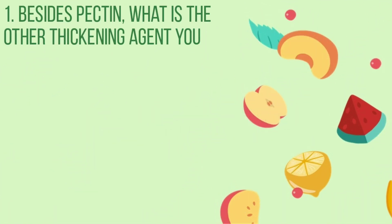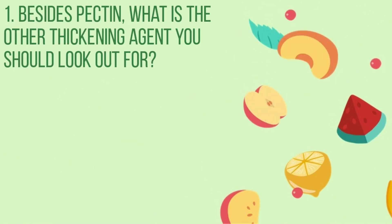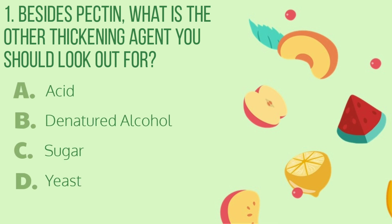Number 1. Besides pectin, what is the other tickling agent you should look out for? Letter A: Acid. B: Denatured alcohol. C: Sugar. D: Yeast. The correct answer is letter A.